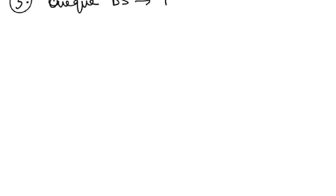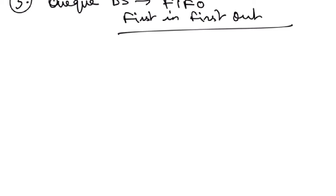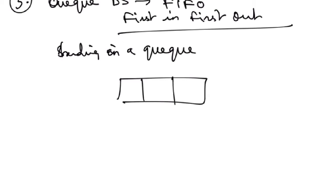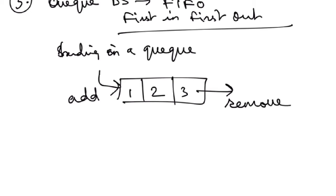The third linear data structure is the Queue, which works on the FIFO principle — First In, First Out. Elements are added from one side and removed from the other. Just like standing in a queue, the first person in line gets the ticket first.